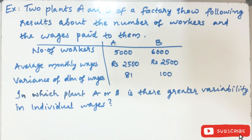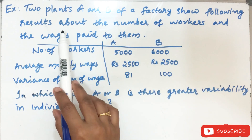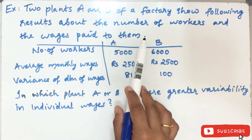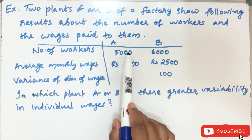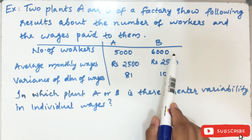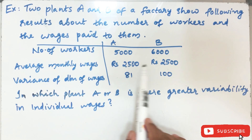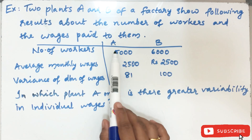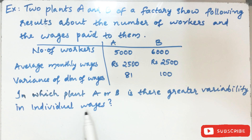First example: Two plants A and B of a factory show the following results about the number of workers and wages paid to them. Plant A has 5,000 workers and Plant B has 6,000 workers. The average monthly wages are equal for both plants at 2,500. The variance of distribution of wages is 81 for A and 100 for B. In which plant is there greater variability in individual wages?